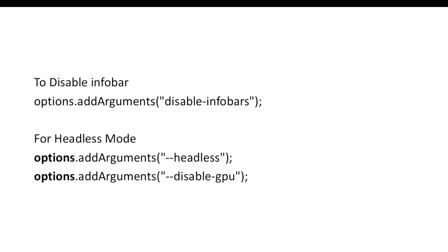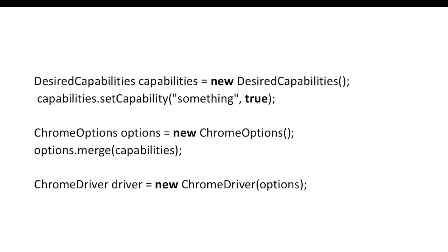For example, when you start ChromeDriver you get an info bar saying 'Chrome is being controlled by automated test software.' If you want to disable that, you just need to pass the argument 'disable-info-bars' and that info bar will not appear. Similarly, if you want to start your browser in headless mode, you just pass '--headless'. I already have videos on headless mode but I will be uploading a video on how to work with ChromeDriver in headless mode soon.